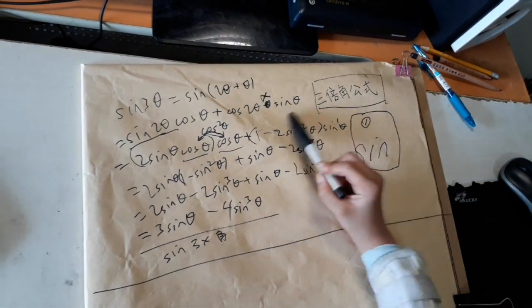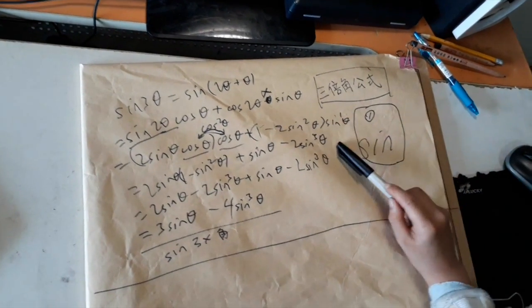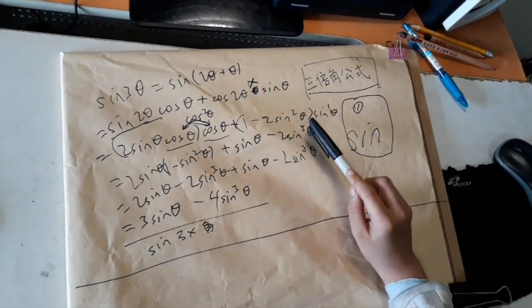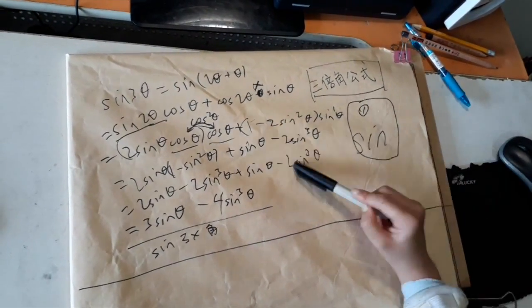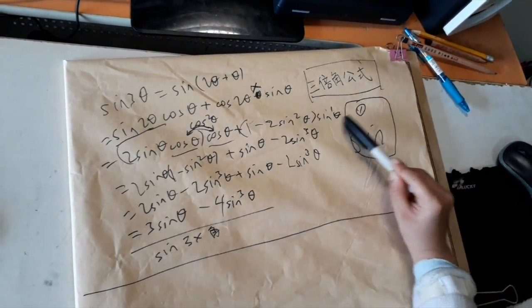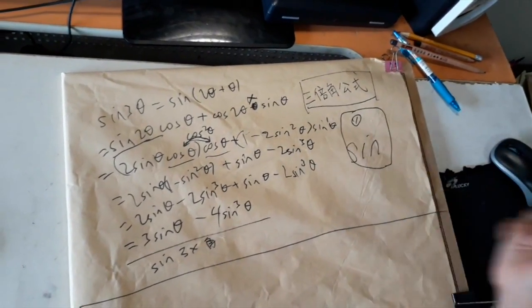Now for this one we're just going to multiply it out. So 1 times sine theta is sine theta. 2 sine squared theta times sine theta is 2 sine cubed theta.